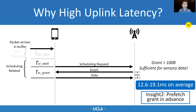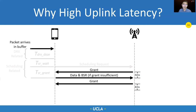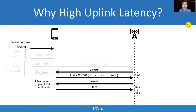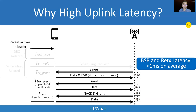We look at two other elements. First, when a grant from SR is not sufficient, the device will further send a request called BSR and get another grant — this latency is called BSR latency. If the data transmission is corrupted, the device needs to retransmit the data, incurring retransmission latency. However, both latencies are less than one millisecond on average, because the initial grant is usually sufficient for small sensory packets and data corruption is rare for uplink packets due to their sizes. Since they are negligible, we don't optimize BSR or retransmission latency in our design.